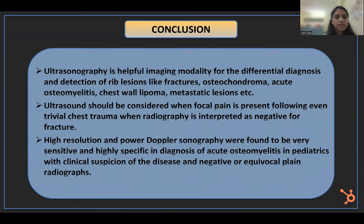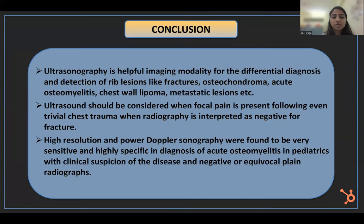In conclusion, ultrasonography is a helpful imaging modality for the differential diagnosis and detection of rib lesions including fractures, osteochondroma, acute and chronic osteomyelitis, chest wall lipoma, metastatic lesions, and others. Ultrasound should be considered when focal pain is present following even trivial chest trauma and when radiography is interpreted as negative for fractures. High-resolution and power Doppler sonography were found to be very sensitive and highly specific in the diagnosis of acute osteomyelitis in pediatric patients with clinical suspicion and negative or equivocal plain radiographs.